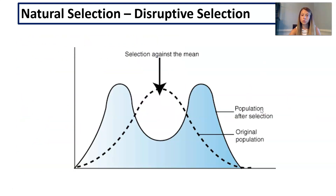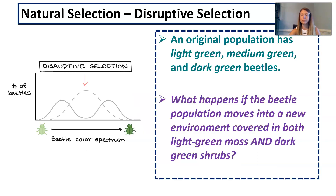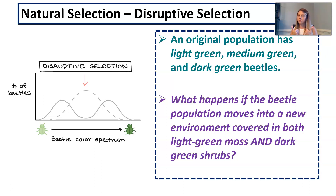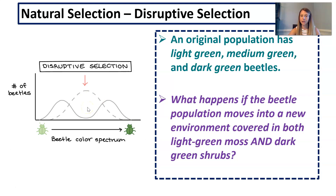Disruptive selection is the opposite of stabilizing selection — pause and get this graph copied down. In disruptive selection, there's selection against the middle trait and towards both extremes. Imagine our original population has light green, dark green, and medium green beetles. If that population moves into a new area covered in both light green moss and dark green shrubs, dark green beetles blend in with the shrubs and survive. Light green beetles blend in with the moss and survive. The medium green beetles stand out in both environments and are more likely to get eaten, causing a decrease in that middle trait. That's disruptive selection.